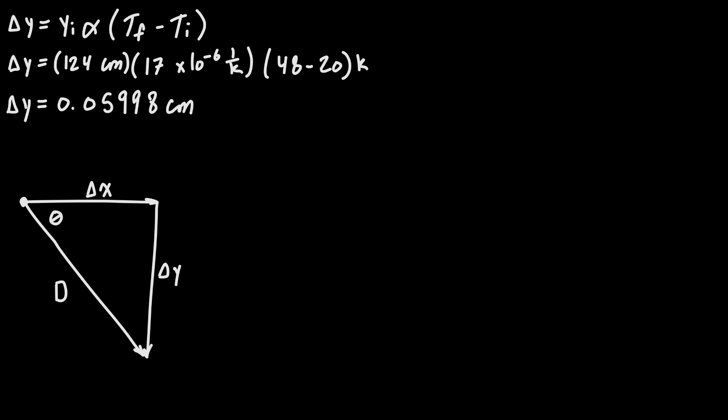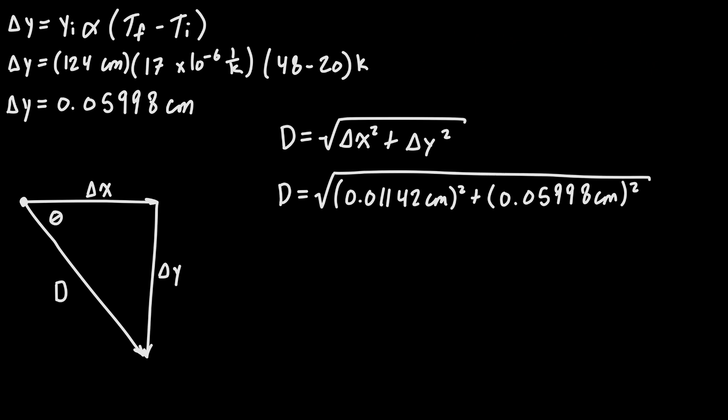So I've just labeled that D as the hypotenuse of that triangle so we can calculate that by saying Δx² + Δy², that's going to get us our magnitude of our displacement. So if we plug in those values, Δx as 0.01142 centimeters and Δy as 0.05998 centimeters, then we'll get that the magnitude of the displacement is going to be 0.0611 centimeters.